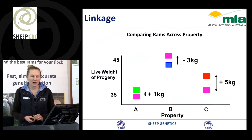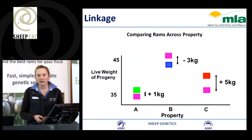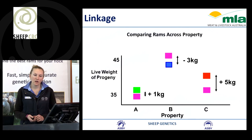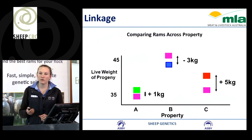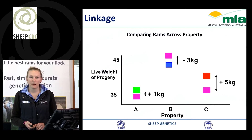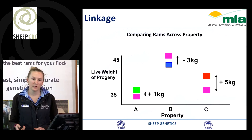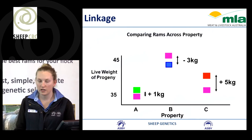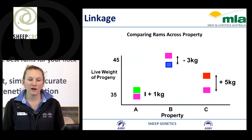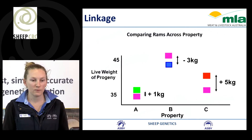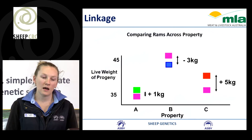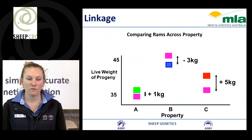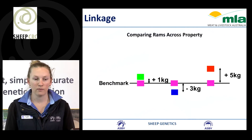Here we have an example of linkage. We have three different properties — A, B, and C — each with different rams. On property B, it looks like the blue ram's progeny are performing better than those on the other two properties. But how do we know whether this is due to the environment or their genetics? If we have a common or 'pink' ram shared across properties, we can use this ram to compare how progeny perform and identify common genes across each of these different properties.